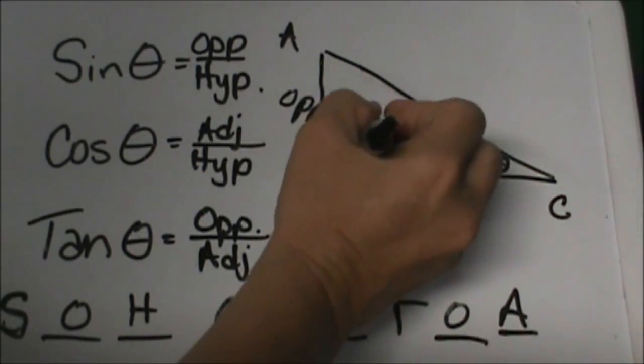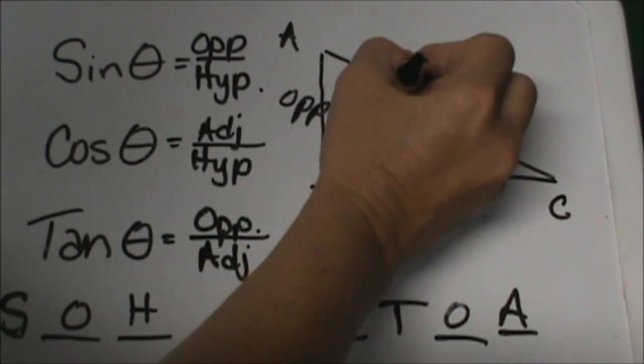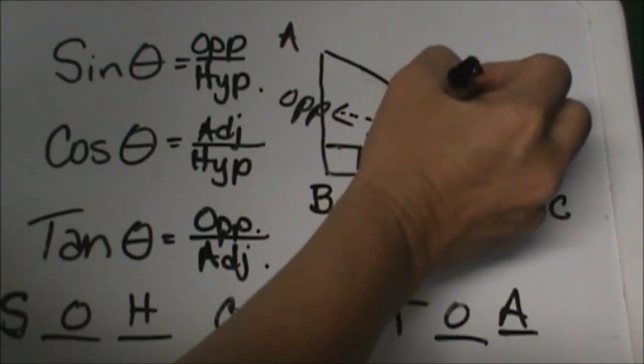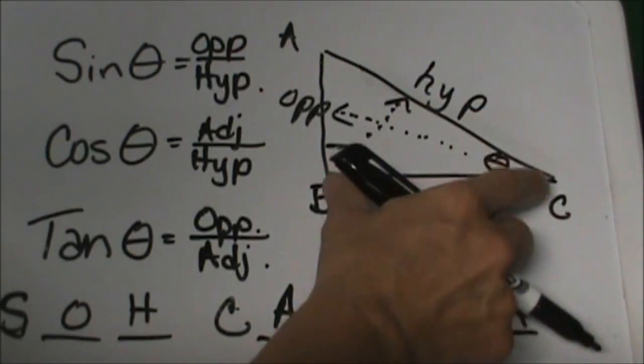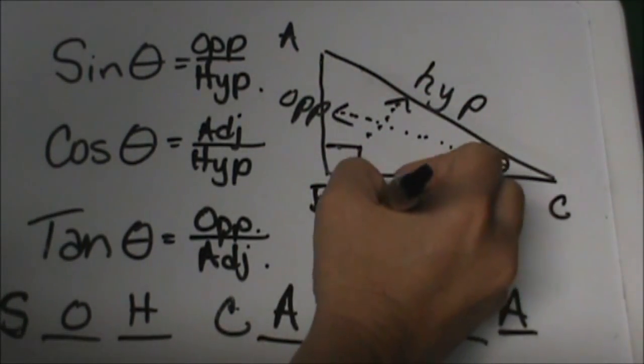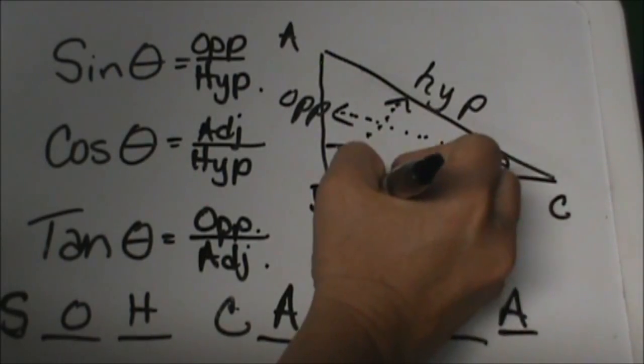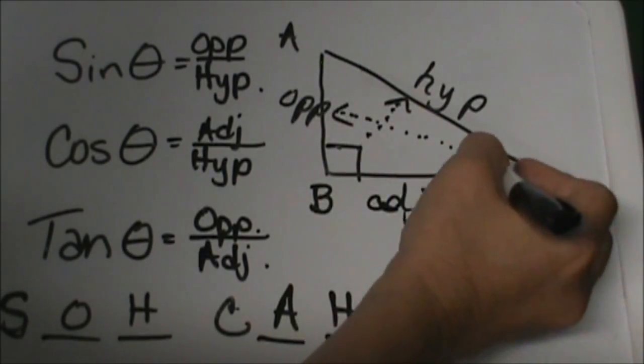Now the hypotenuse is always opposite the right angle, so let's go ahead and label the hypotenuse. And then the second leg that we don't have labeled is the adjacent leg, and it's considered adjacent because it's next to the reference angle.